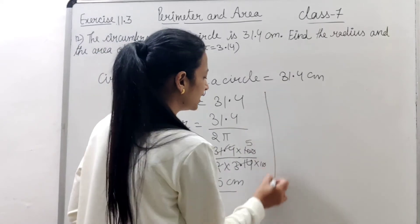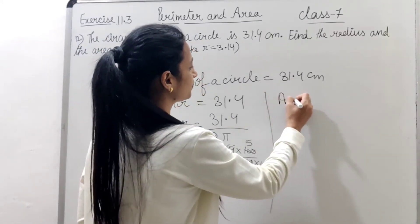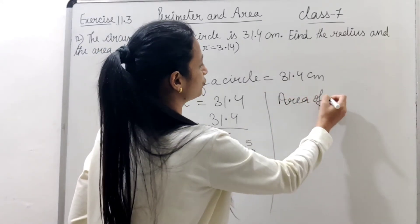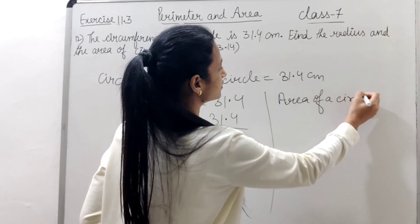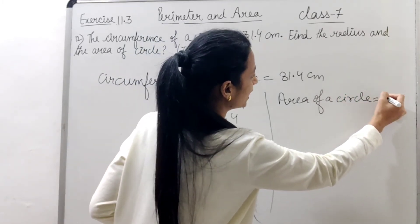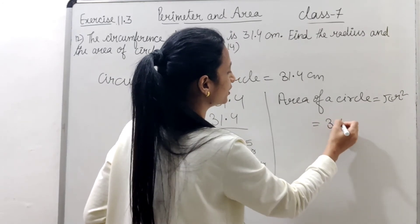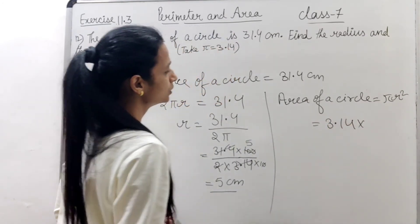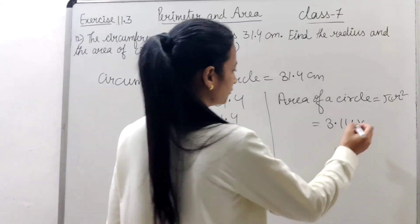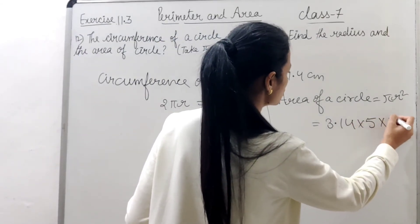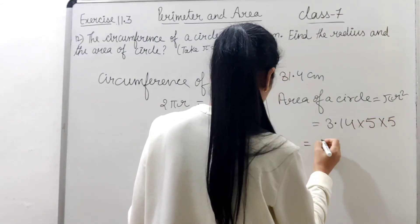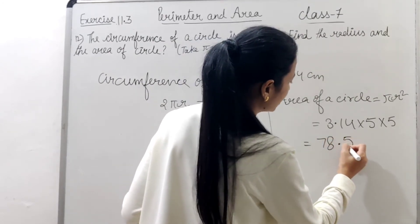Radius is found. Now we will calculate area. Area of a circle equals πr². π is 3.14 into r which we found is 5, then 5 into 5 equals 78.5 square cm.